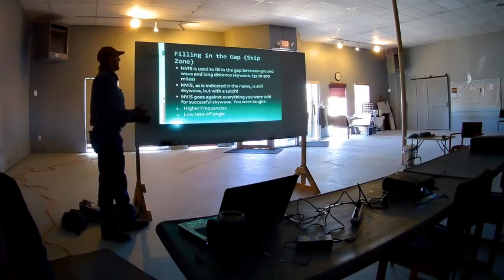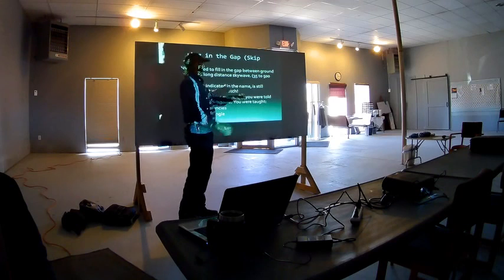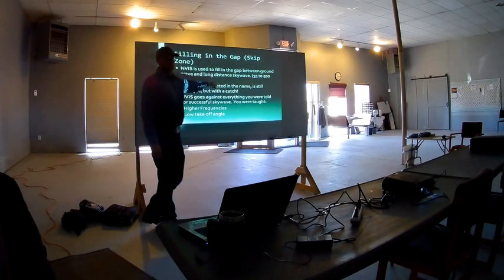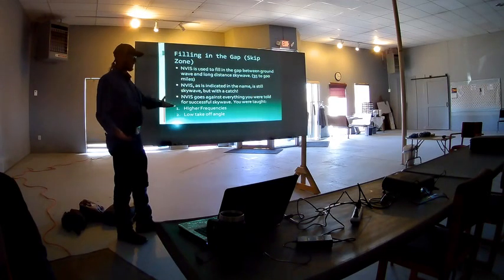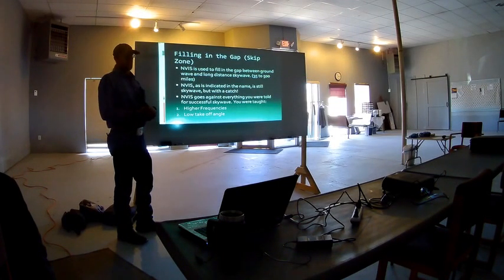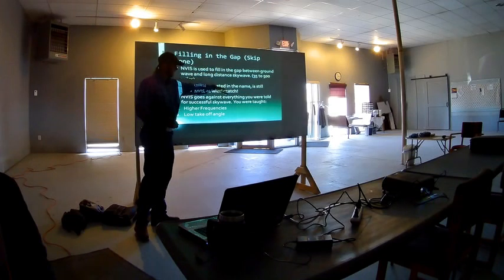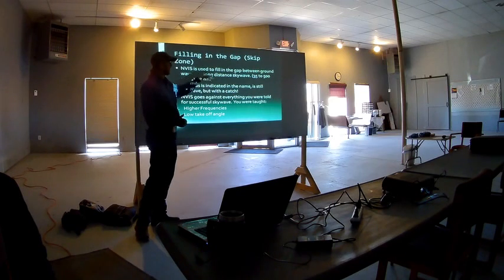NVIS — near vertical incidence sky wave — is used to fill in the gap between ground wave and long-distance sky wave. That's typically between 35 to 500 miles. Most HF frequencies get around 35 miles with ground wave. Traditional sky wave doesn't reach much closer than that 500-mile mark because the angle isn't tight enough to close in on that point. So we want to fill in that gap.